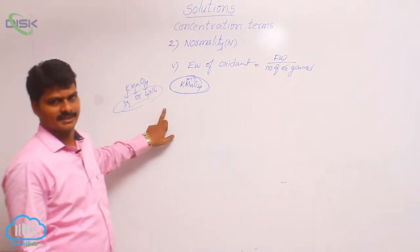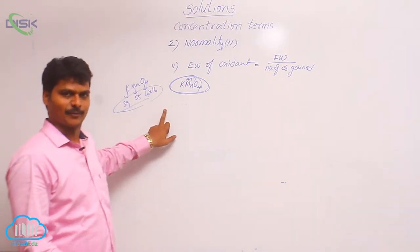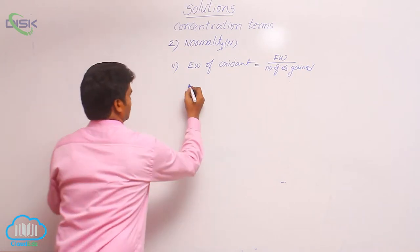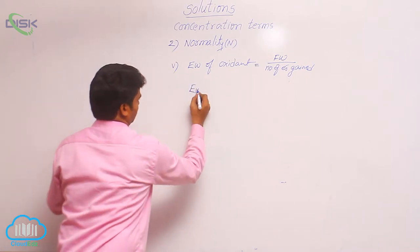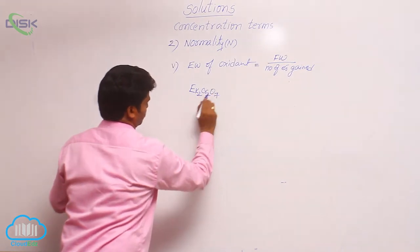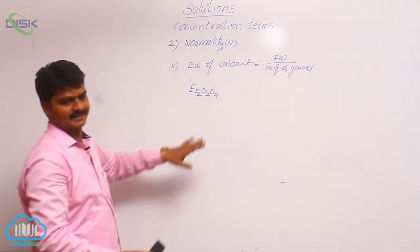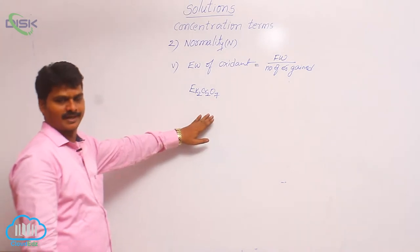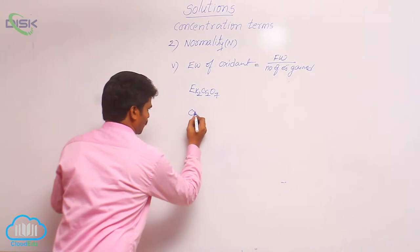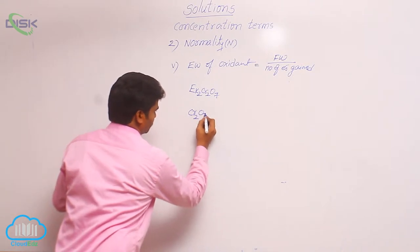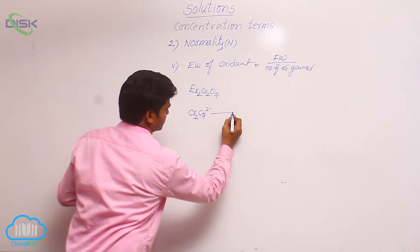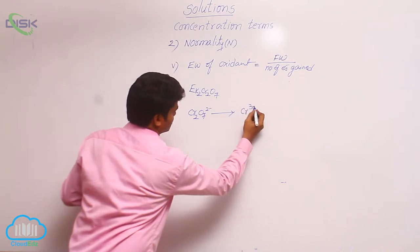Let us see how to calculate the equivalent weight of potassium dichromate, K₂Cr₂O₇. It is also an important oxidant used in organic chemistry. In potassium dichromate, Cr₂O₇ is called the dichromate ion, and it is changed to chromium ion in acidic medium.